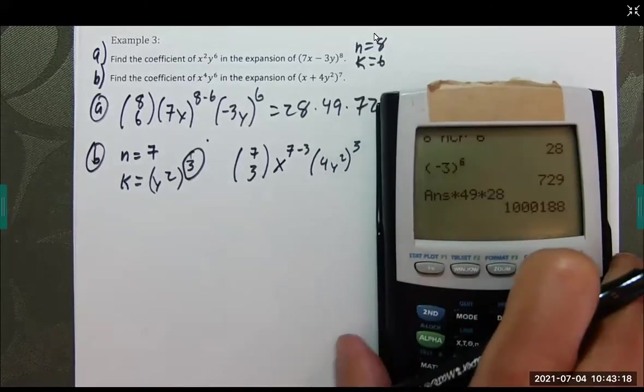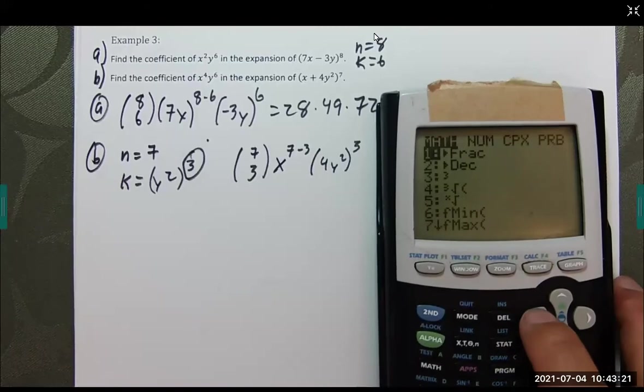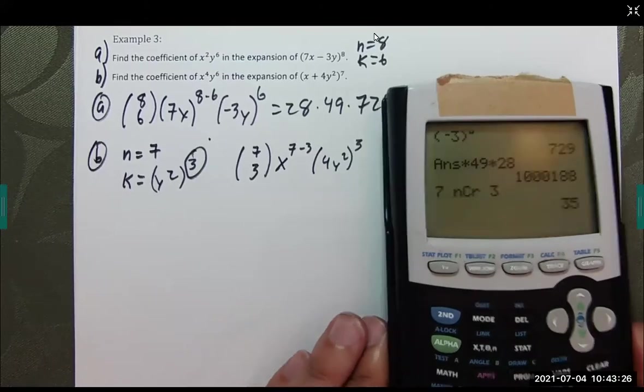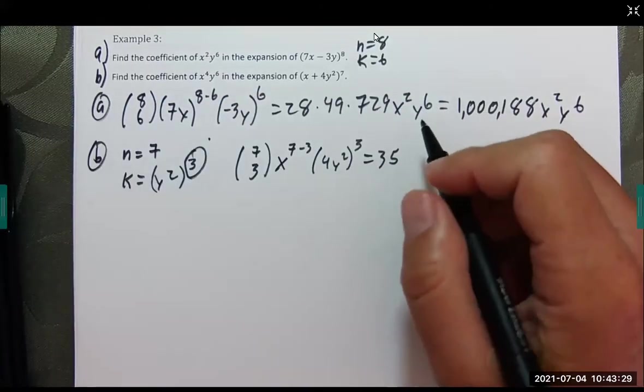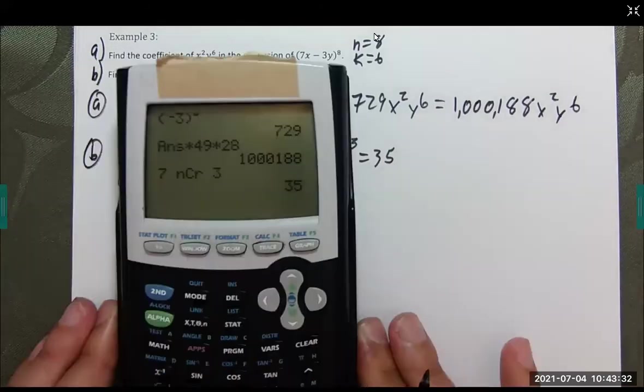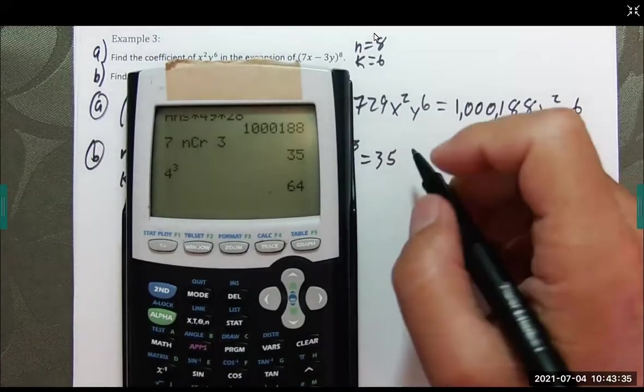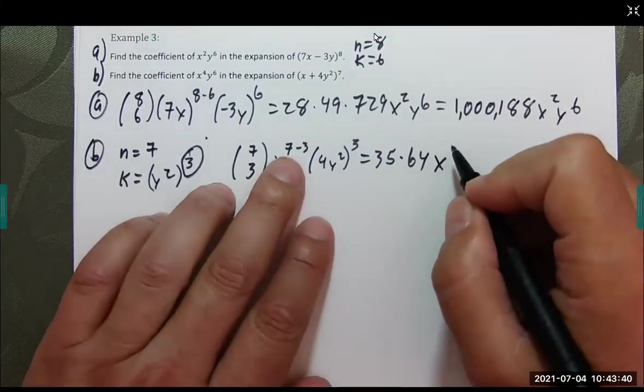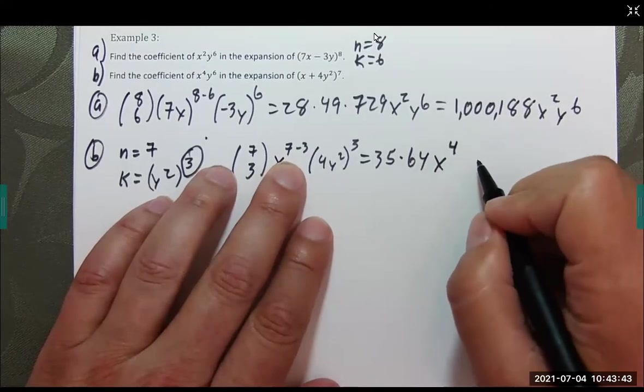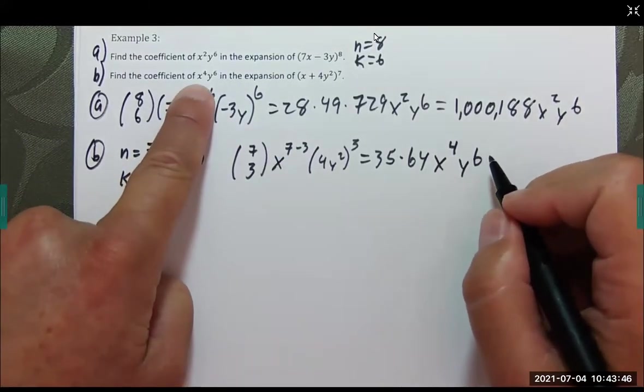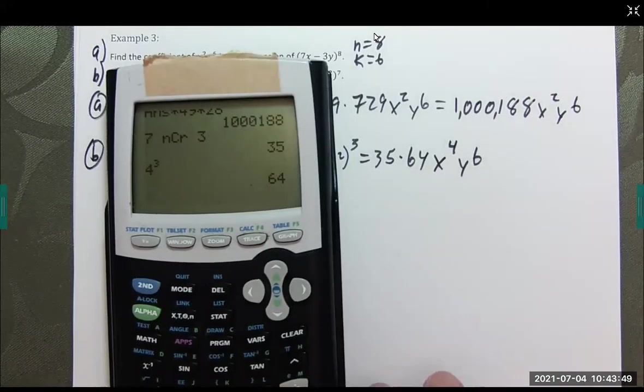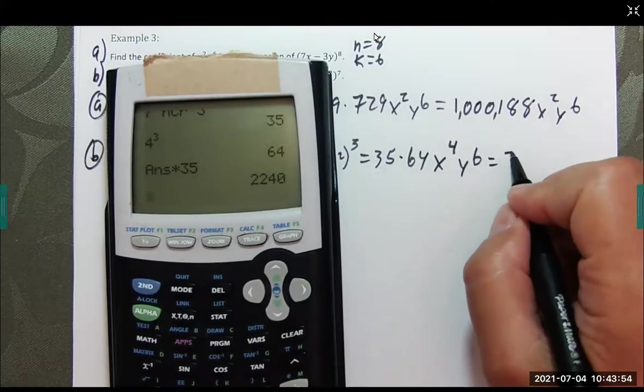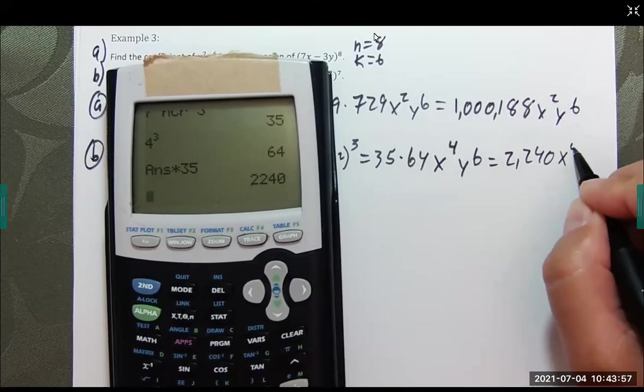So, let's do 7 choose 3, 35, and 4 to the third power. Let's get that 4 to the third power, 64, and that's going to give us x to the 4th, y to the 6th, which is what we're looking for. So, I just need 35 times 64. So, 64 times 35. There we go. 2,240, x to the 4th, y to the 6th.